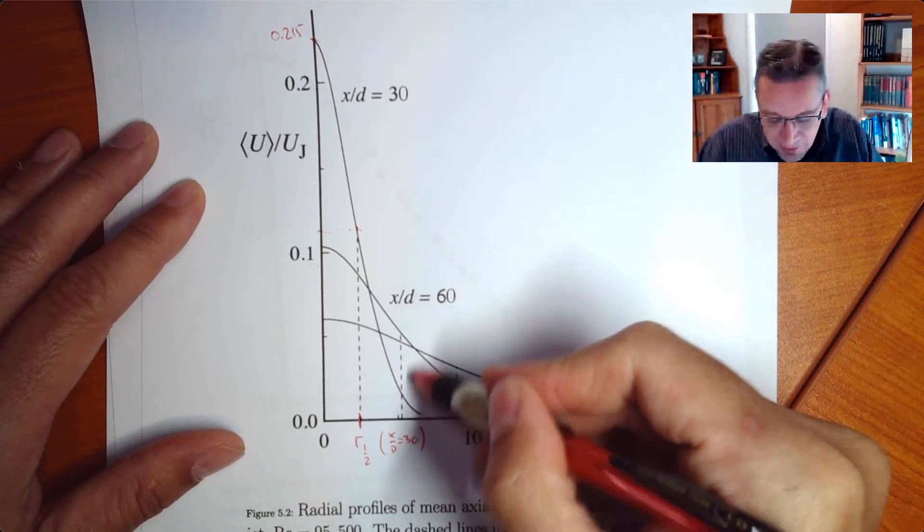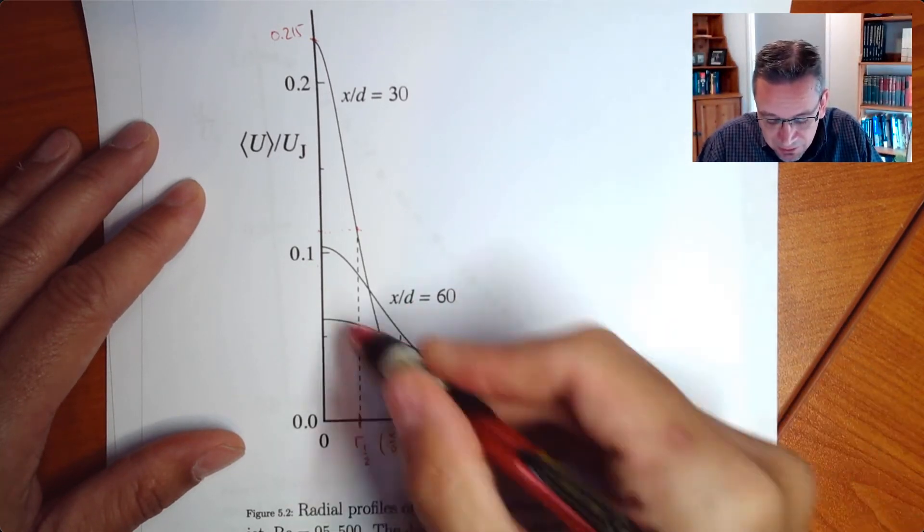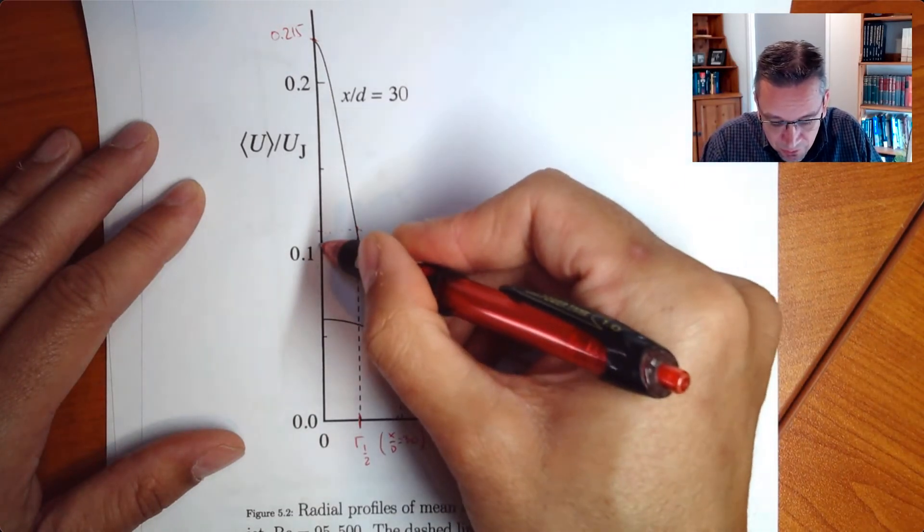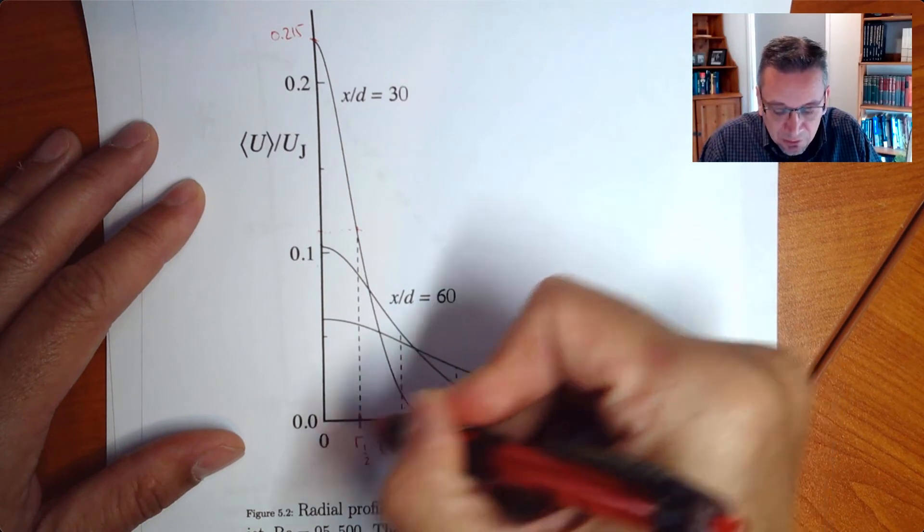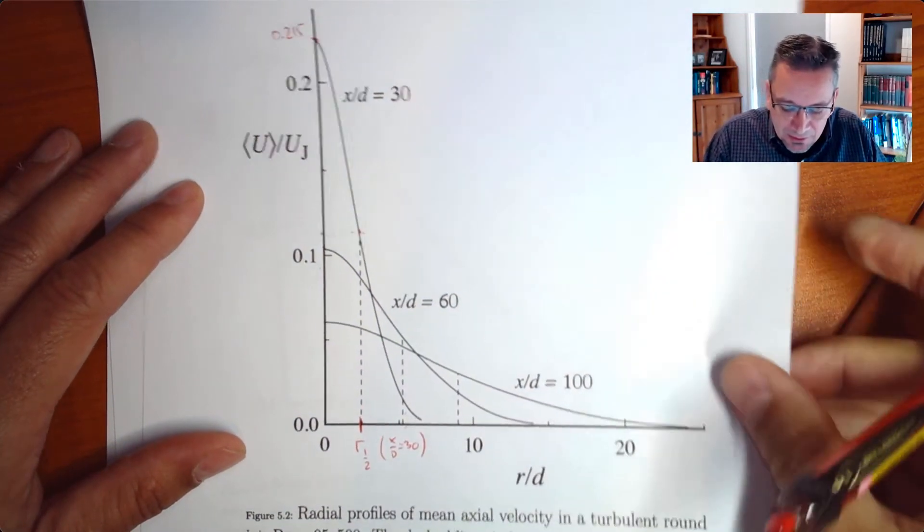So then you do the same for x over d equals 60 and x over d 100. So look at the centerline velocity, you use half of it and then look what is the radial distance for that.